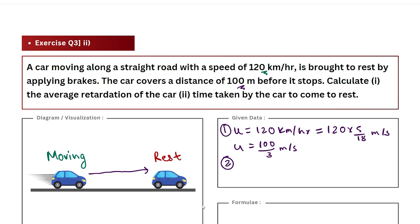The second quantity is the distance, given as 100 meters. The third value, which is given indirectly, is that the car comes to rest at the final state, so we can say that the final velocity will be 0 meter per second. These are the three given values.